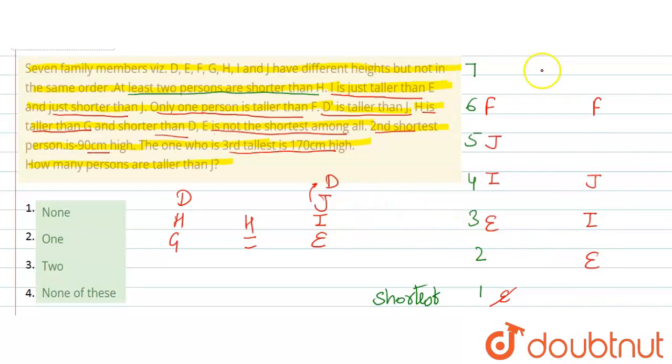Ab J se upar D hona chahiye, to J se upar D aagaya. Phir uske niche H hona chahiye, to yahan par H aagaya. And H se niche G jana chahiye, to yahan par aapke paas G chala gaya.